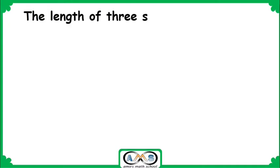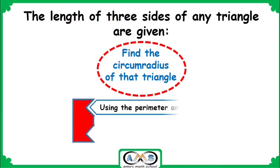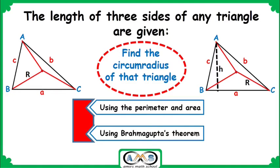Welcome to Amir's Math School. In this video I am going to discuss the very interesting topics of circumcenter, circumcircle, and circumradius. The main point of discussion is: given the length of three sides of any triangle, we are going to find the circumradius in two different ways — first using the perimeter and area, and second using Brahmagupta's theorem, which relates the circumradius, side length, and height of the triangle.